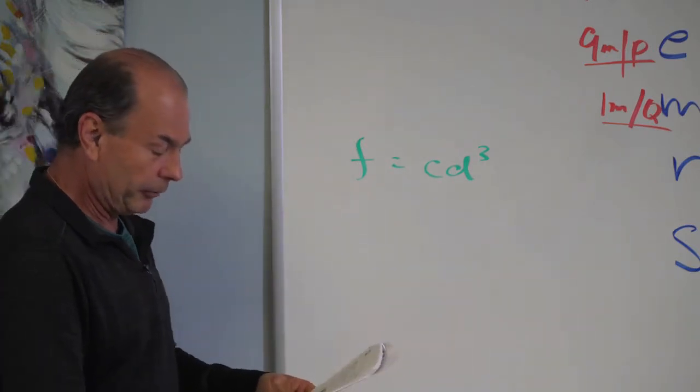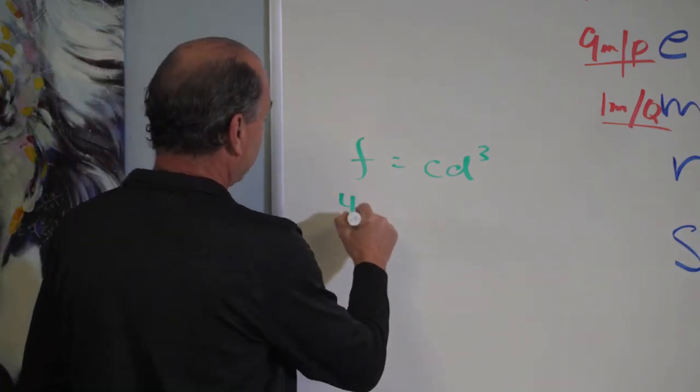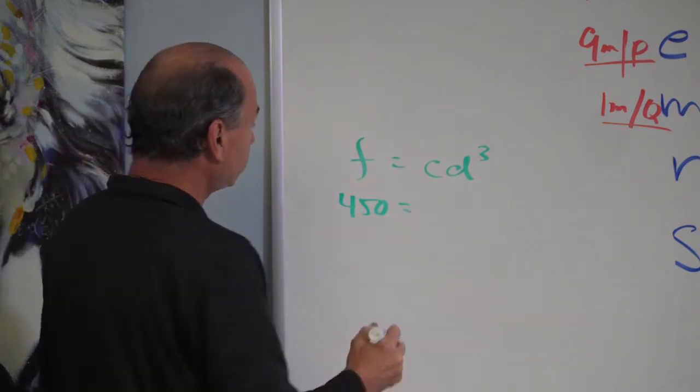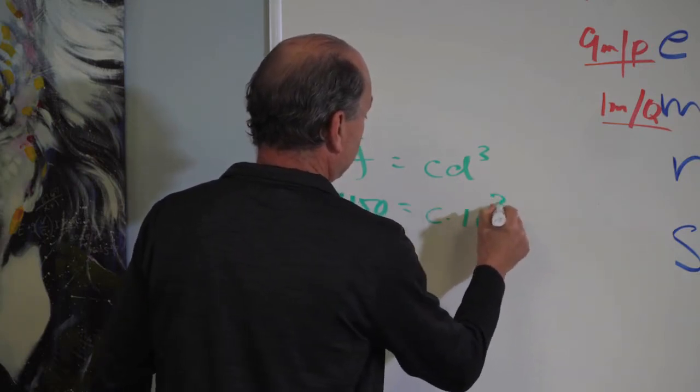Very simple. Plug in the numbers they give you. So they said F is 450. Plug that in. What do they say C was? Well, we're looking for C. What do they say D was? 10. All right. So D is 10 and they say to cube it.